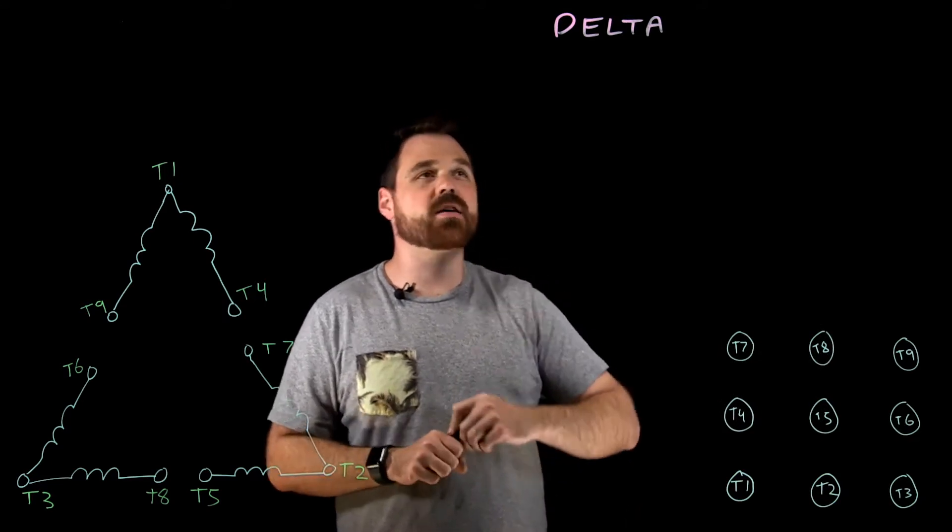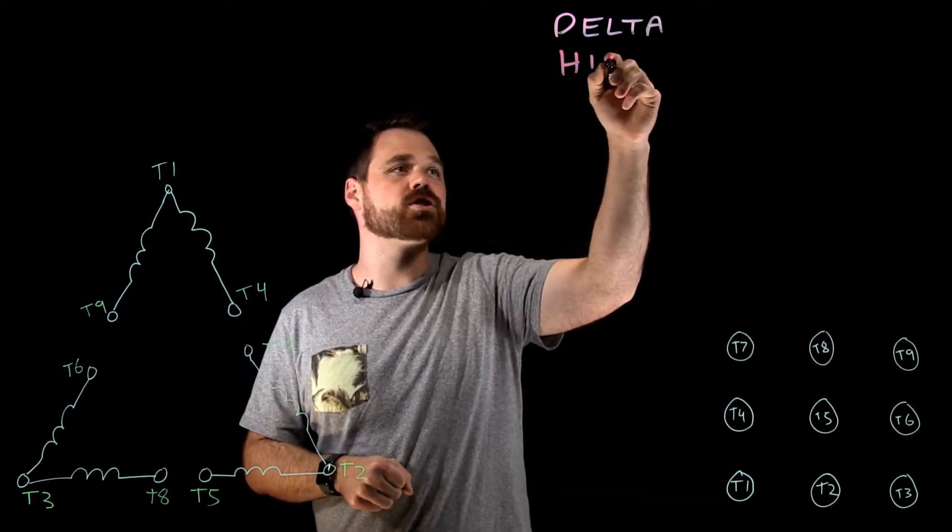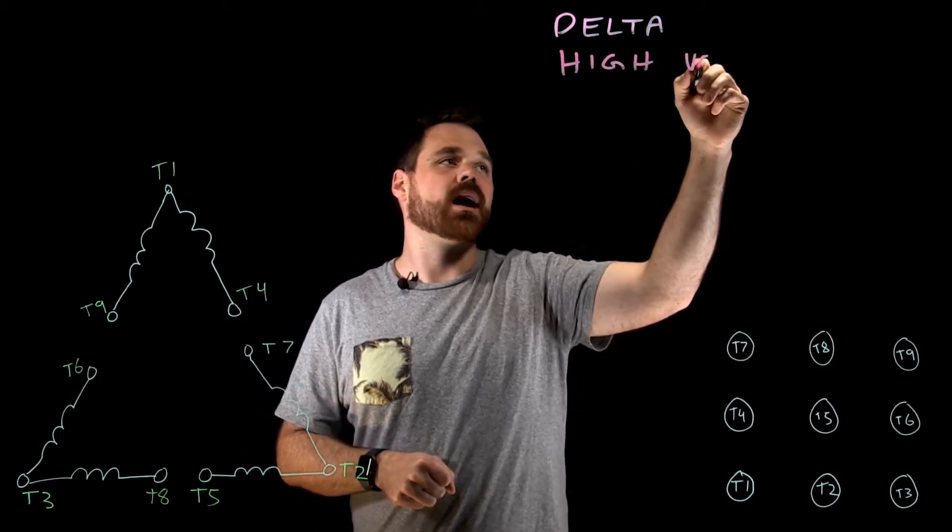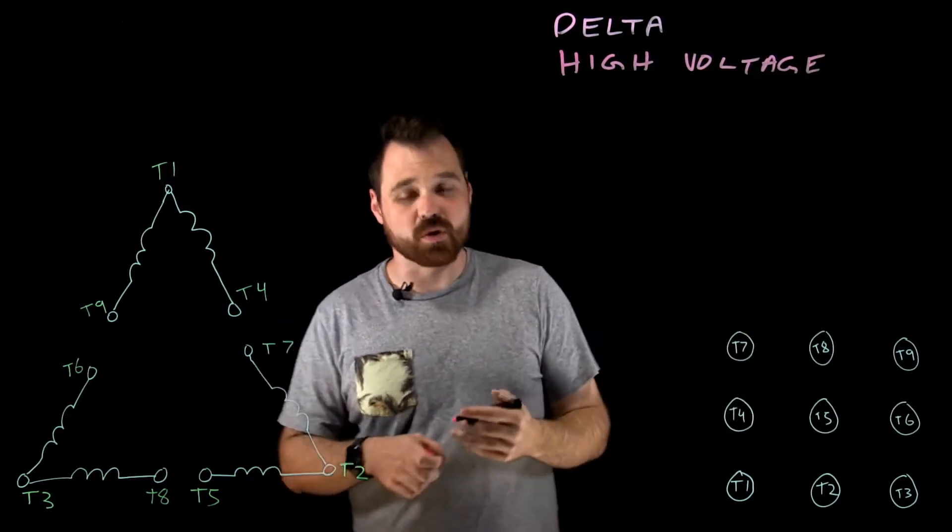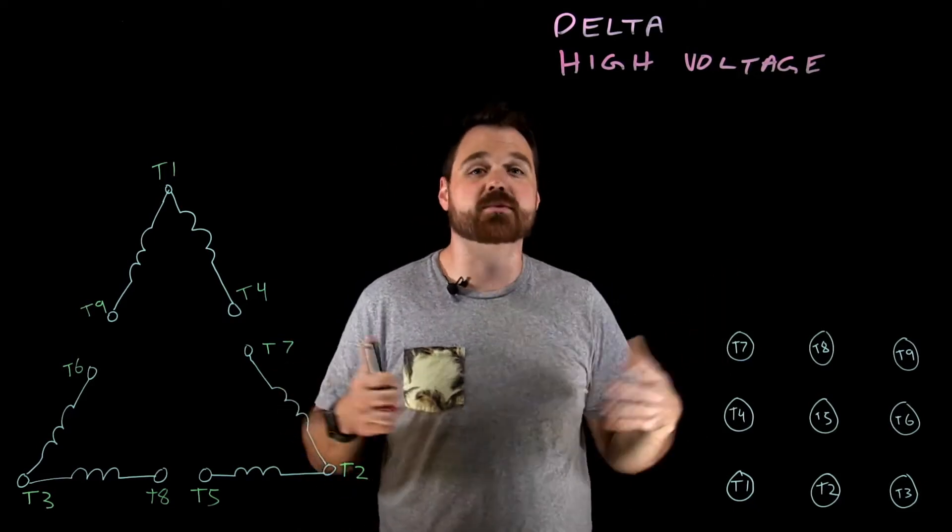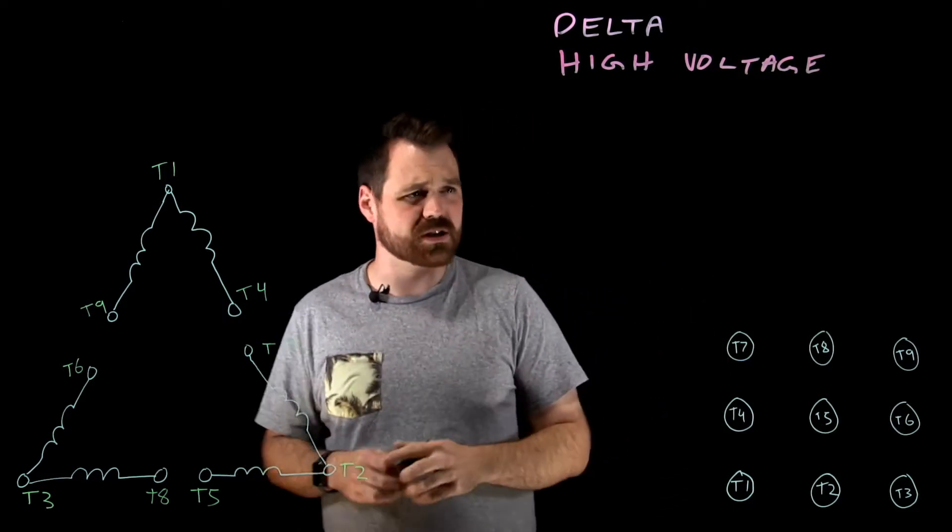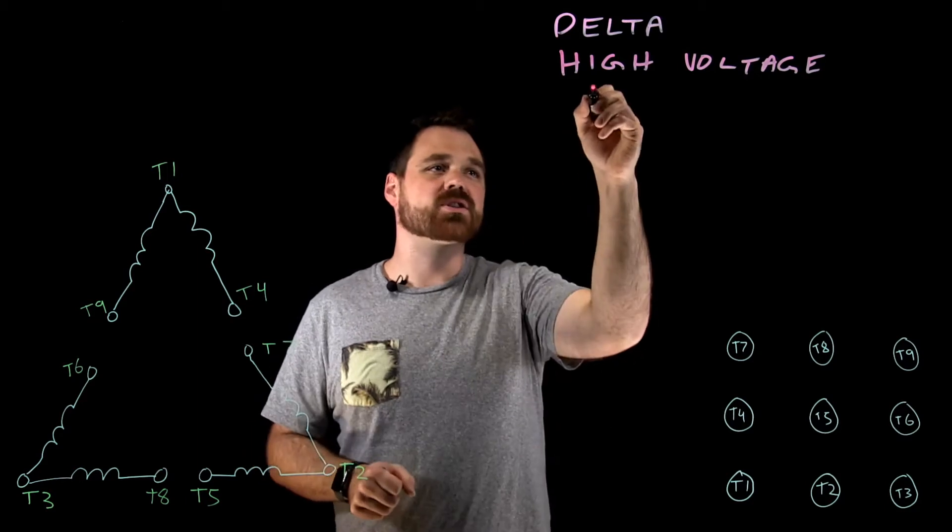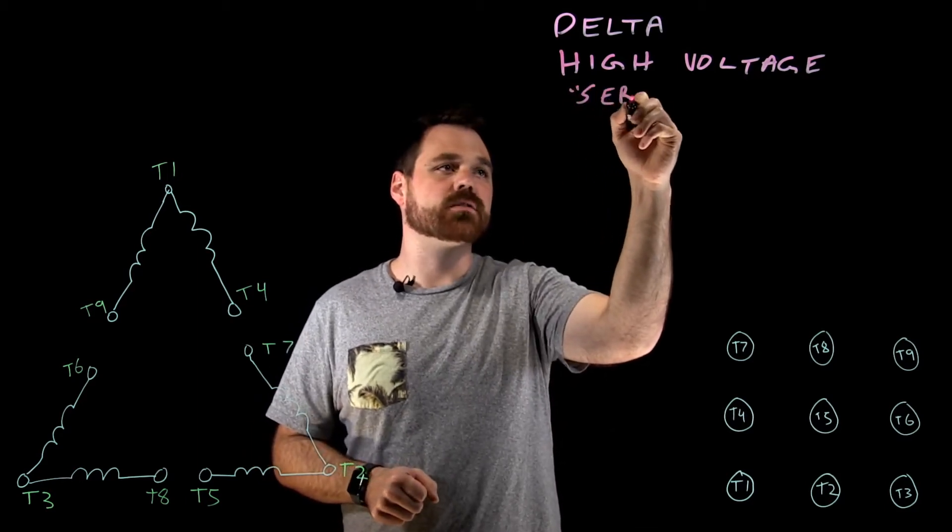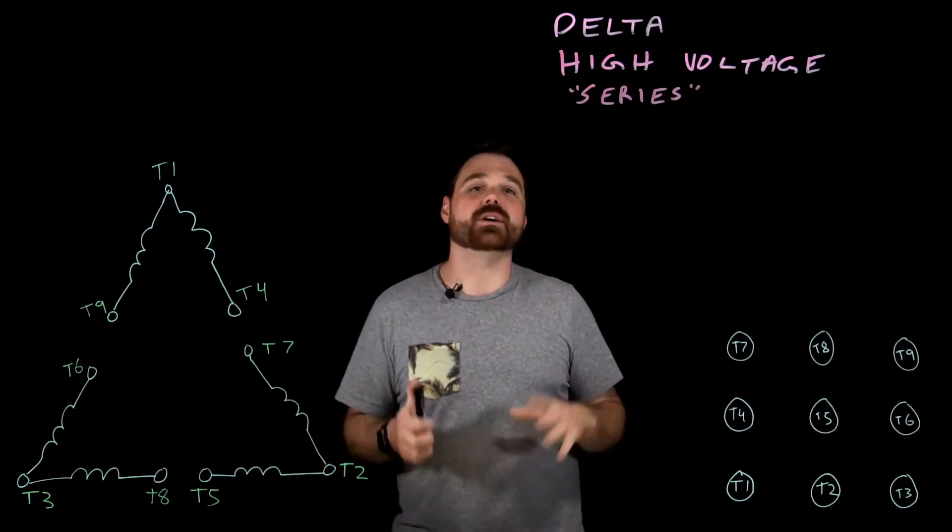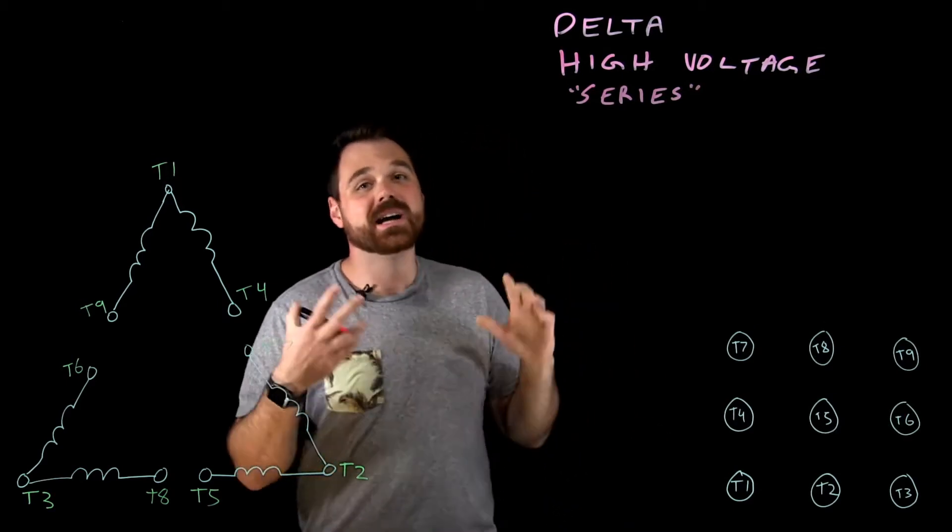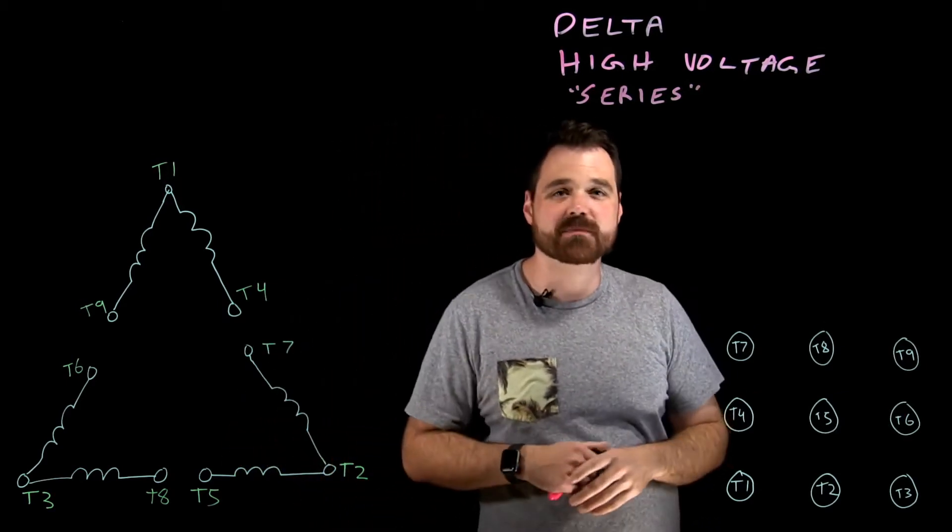And we're just going to talk about how to wire this for a high voltage connection. So meaning we would be connecting this motor up in most cases to hook up to a 480 volt source. We usually call this our series connection. I do have another video if you're looking for the low voltage connection, you can check that one out - low voltage Delta motor connection.